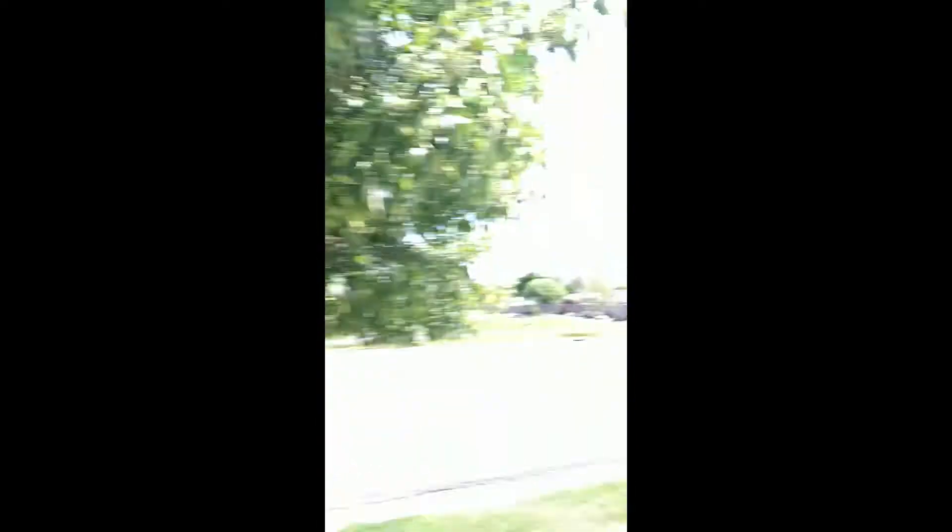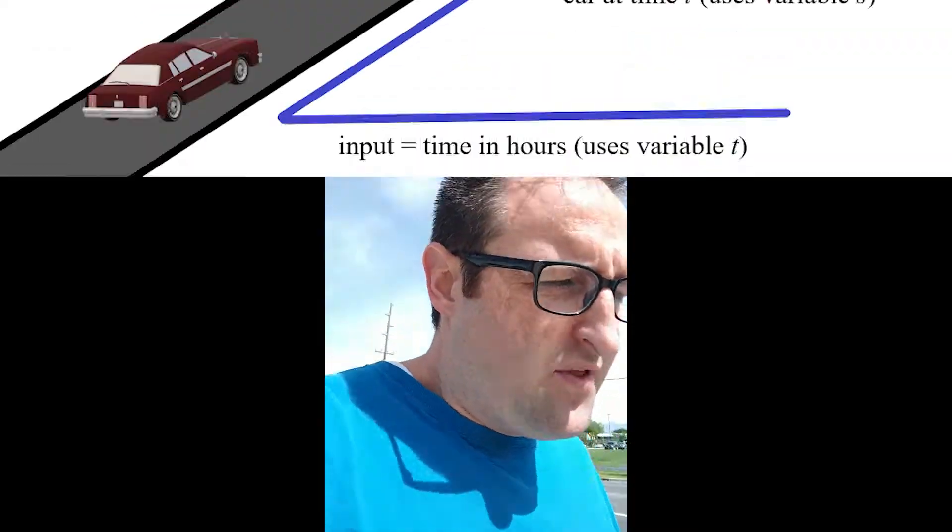Now that car has an input-output relationship in relation to its position and how long it's been driving. If a car like that keeps a constant speed, you can figure out how far it goes by simply looking at how long it drives at that speed. For example, if a car is driving at the speed limit here — you can actually see it's 45 miles an hour. So if a car drove on this road at a constant speed of 45 miles an hour for two hours, you probably can figure out that it would travel 90 miles. So the input is how much time they drive and the output is how far they go.